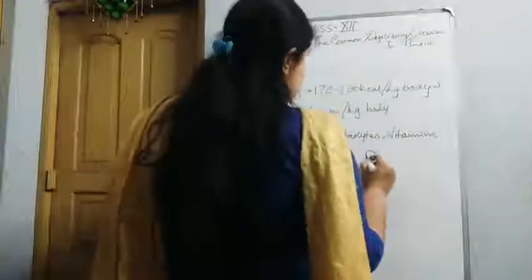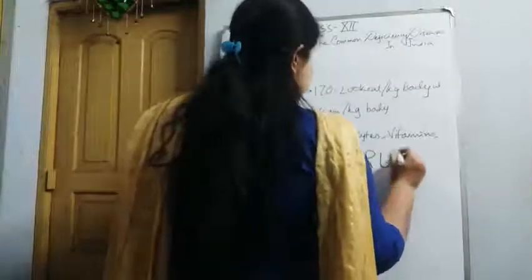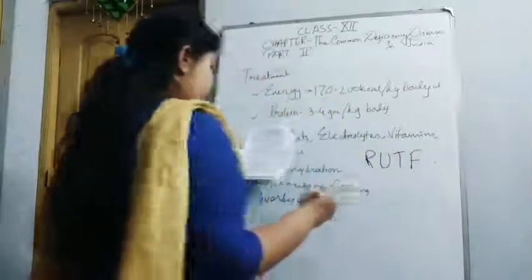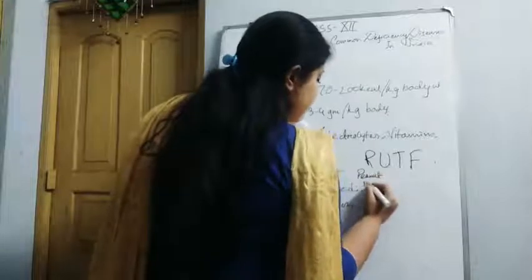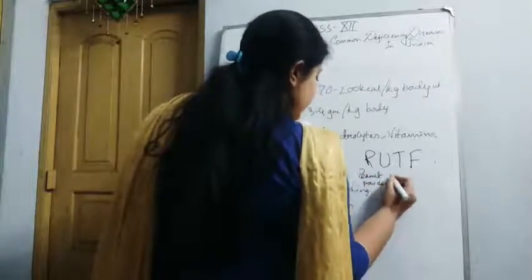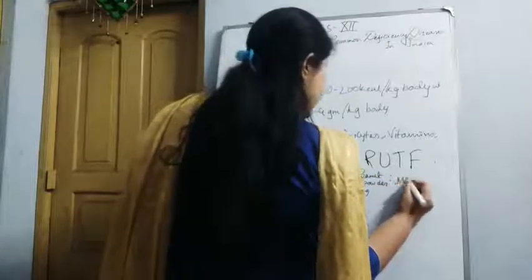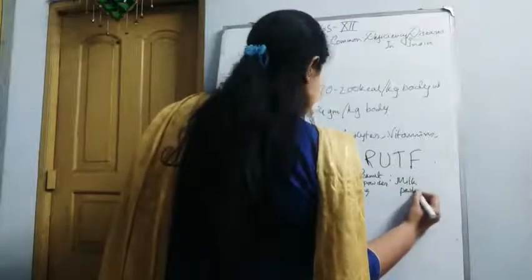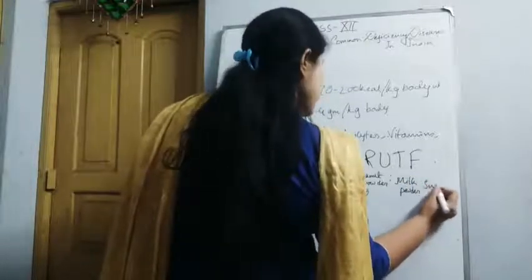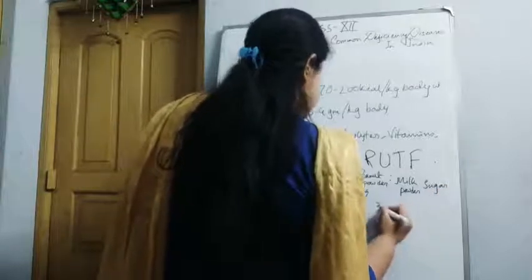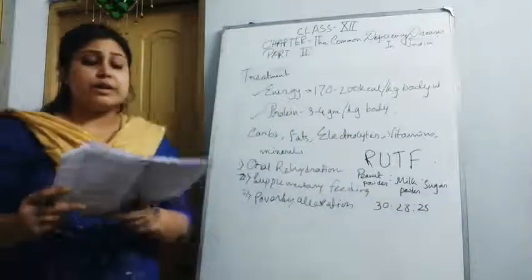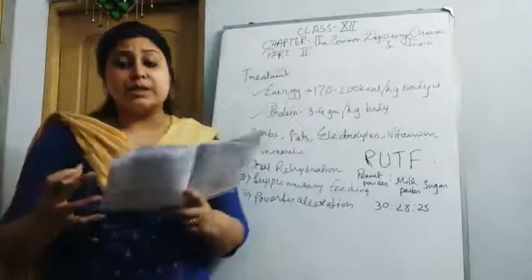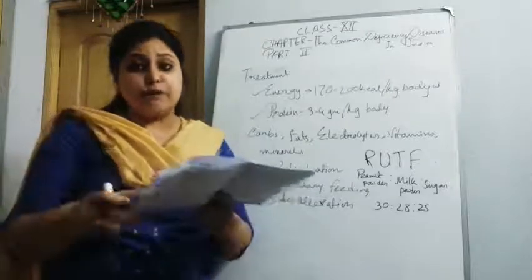Ready-to-use therapeutic foods include a formula where peanut powder, milk powder, and sugar in a ratio of 30 to 28 to 25 grams should be given to the child for rapid catch-up growth.